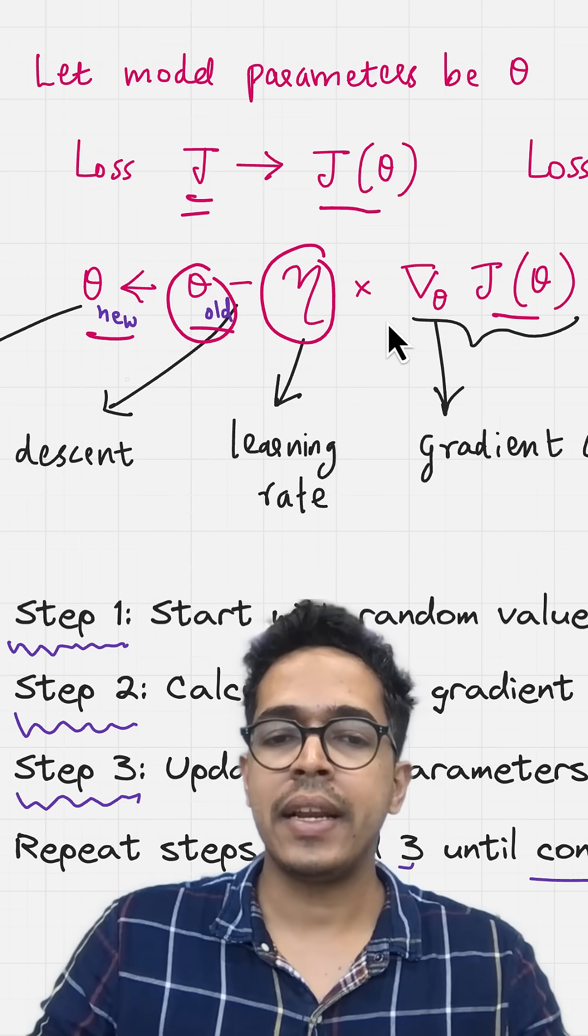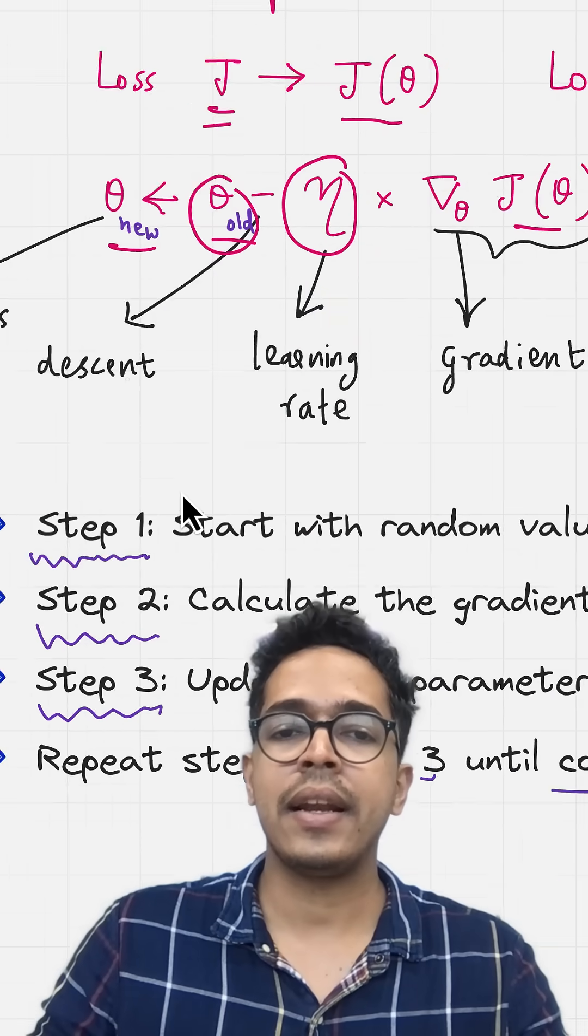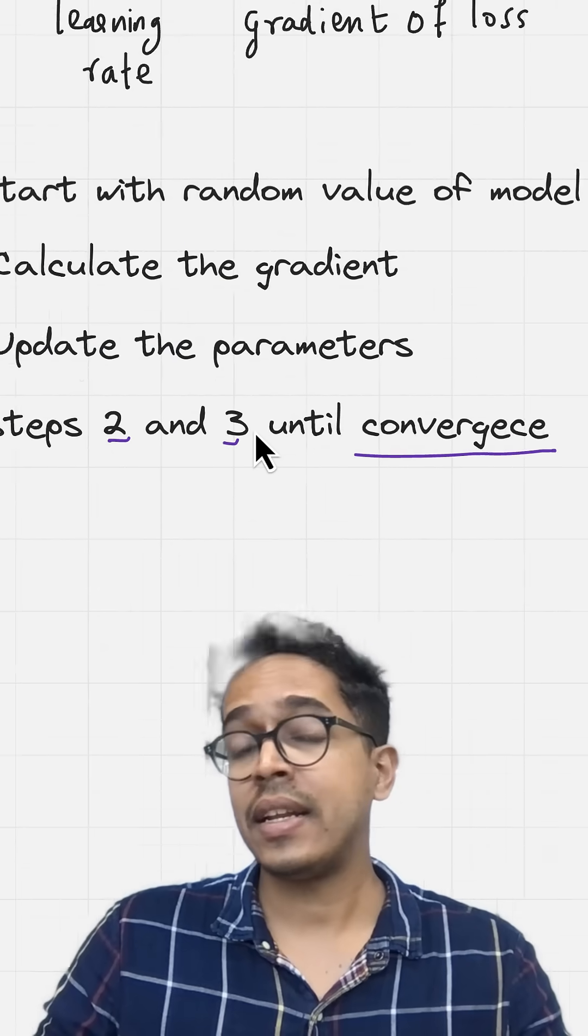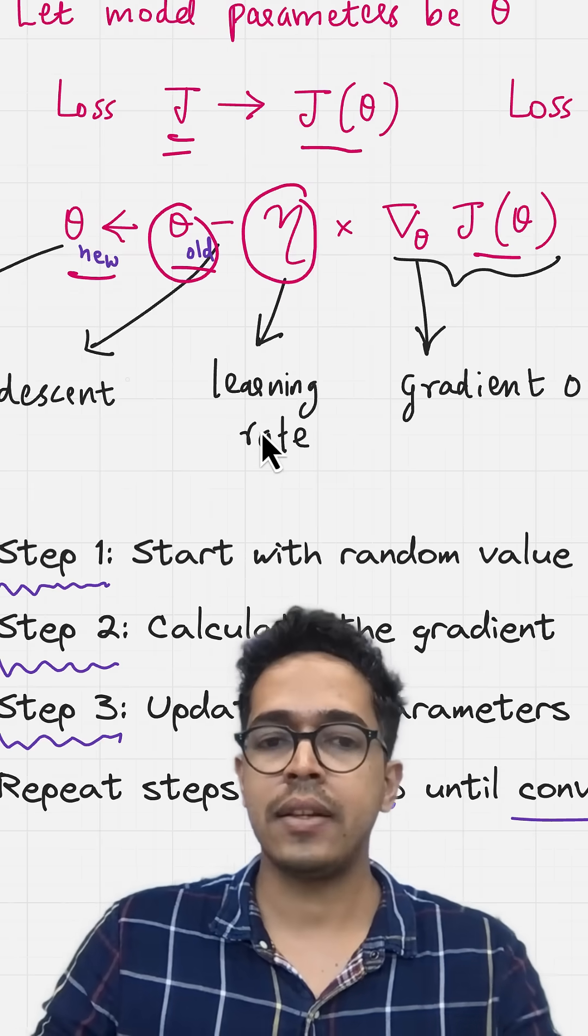This is one step of gradient descent, and these steps are repeated again and again until you reach convergence. This is gradient descent in a nutshell. If you want to learn more, check the link in the description.